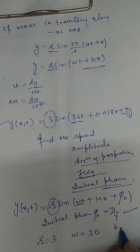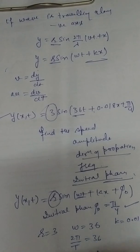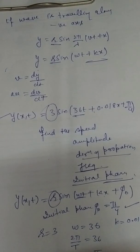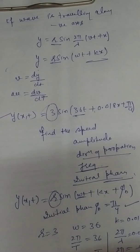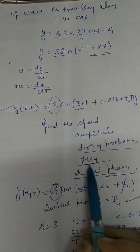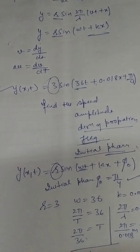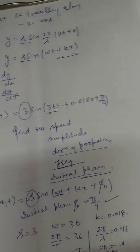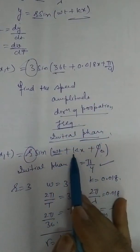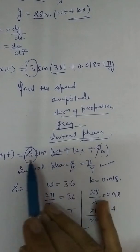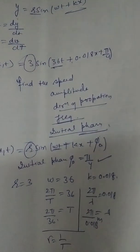Since the sign between ωt and kx is plus, the wave travels in the negative direction of the x-axis. Comparing with y(x,t) = r sin(ωt + kx + φ₀): amplitude r = 3, ω = 36, k = 0.018, and initial phase φ₀ = π/4. Time period T = 2π/36 seconds. Wavelength λ = 2π/0.018 meters. Frequency is the reciprocal of the time period. Direction is along the negative x-axis.